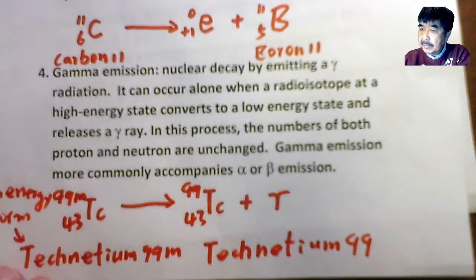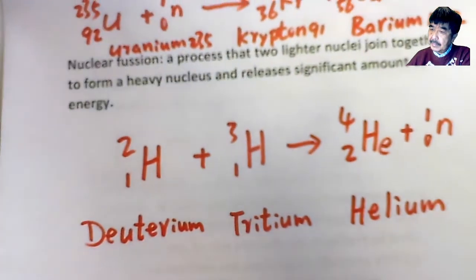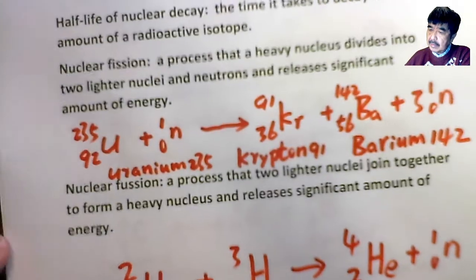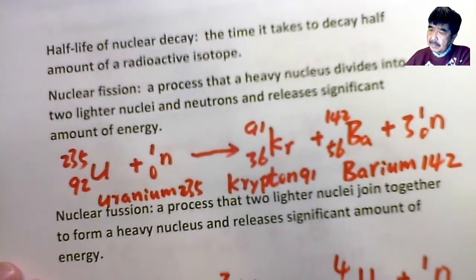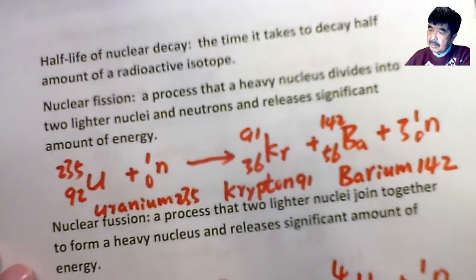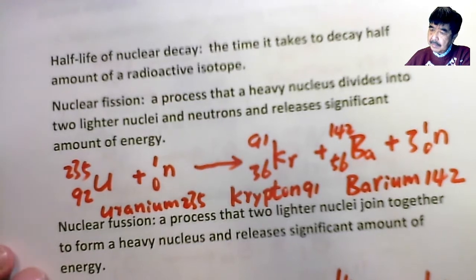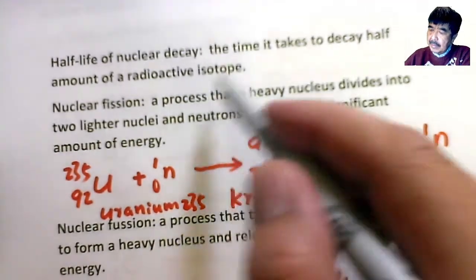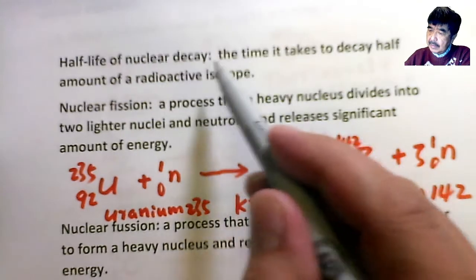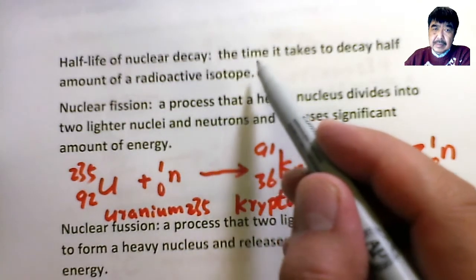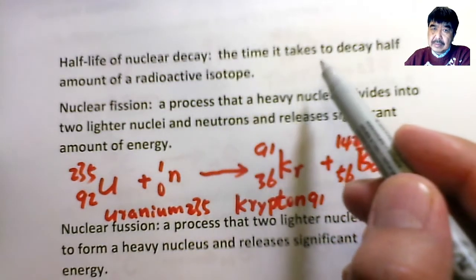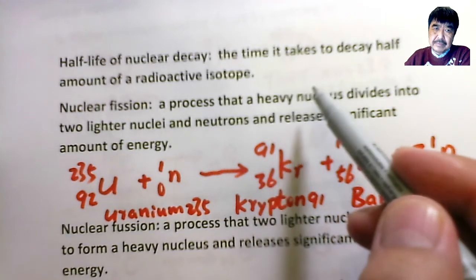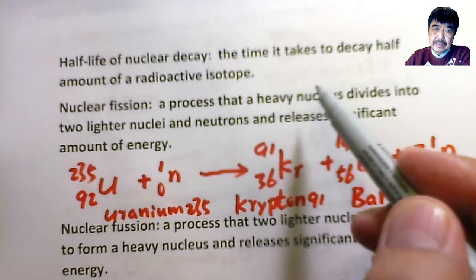Next, let's take a look at the often-used concept called the half-life of nuclear decay. The definition is the time it takes for half the amount of a radioactive isotope to decay.